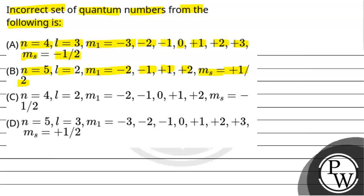Third option: n=4, l=2, ml= -2 to +2, ms= -½. Fourth option: n=5, l=3, ml= -3 to +3, ms= +½. The key concept for this question is quantum numbers.